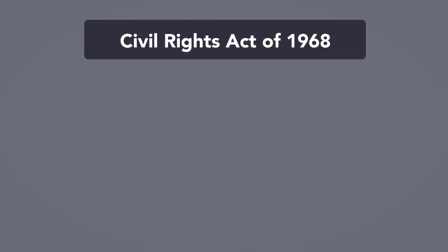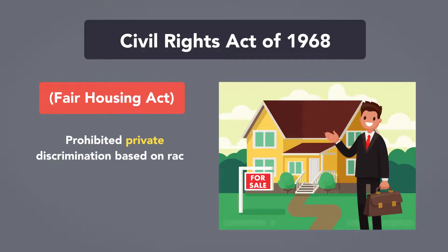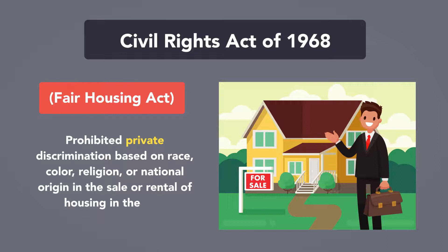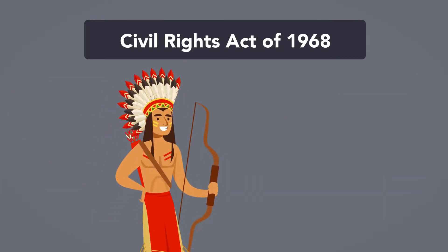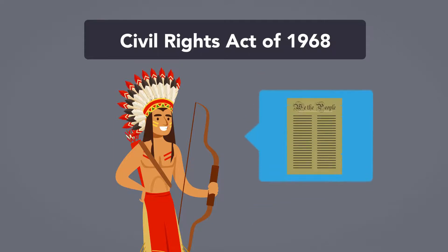Finally, the Civil Rights Act of 1968, also known as the Fair Housing Act, prohibited private discrimination based on race, color, religion, or national origin in the sale or rental of housing in the United States. Additionally, federal law bars states and Native American tribal governments from violating the constitutional rights of Native Americans.